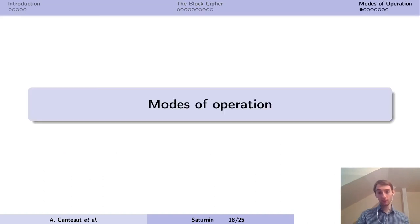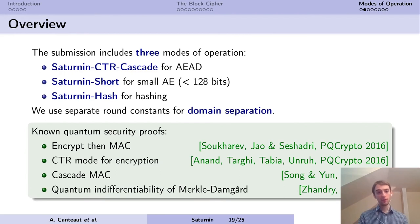Now let's have a look at the modes of operation that we proposed. The submission includes three modes of operation: Saturnin Counter Cascade, Saturnin Short, and Saturnin Hash. We're going to use separate round constants, separate values of the domain separator, for all of these modes. They are dictated by the quantum security proofs that we found in the literature. Encrypt-then-MAC is a nice construction. The counter mode for encryption has a proof of security, the cascade MAC also. There is a proof of indifferentiability of the Merkle-Damgård construction in the quantum setting.